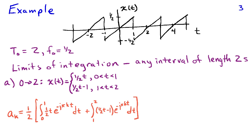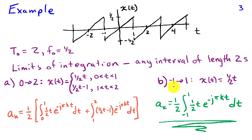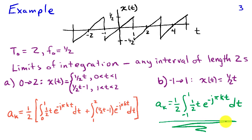The question is whether there's an easier choice for the limits other than 0 to 2 — and it turns out there is. If I choose limits from minus 1 to 1, then I only have one definition of x(t), and x(t) is just (1/2)t. So my expression for a_k becomes (1/2) times the integral from minus 1 to 1 of (1/2)t e to the minus jπkt dt. This is a simpler integral to evaluate because there's only one term, as opposed to the two required if we choose 0 to 2. Either choice will give you the identical answer, assuming you do the calculus correctly.